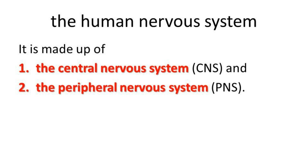The human nervous system is of two types. The first is the central nervous system, called the CNS. The second is the peripheral nervous system, called the PNS.